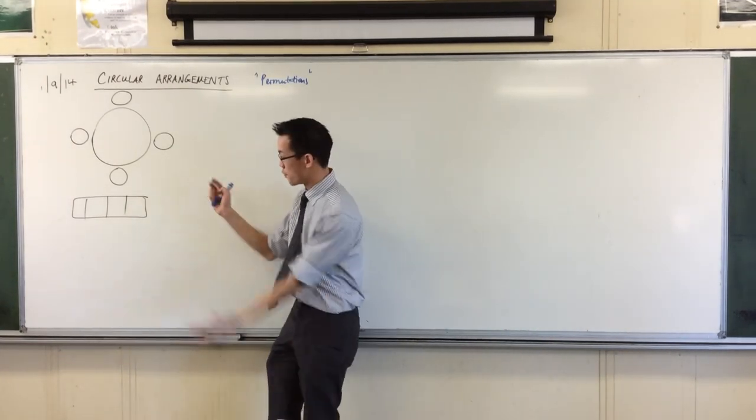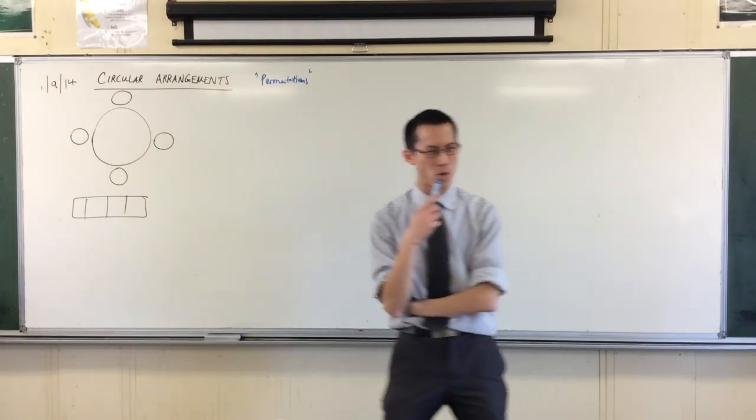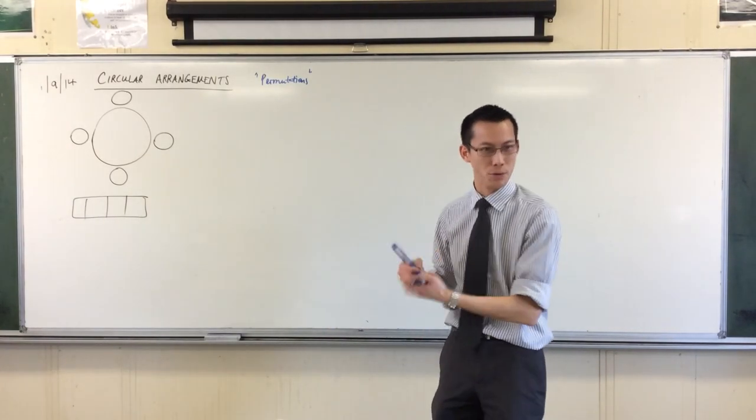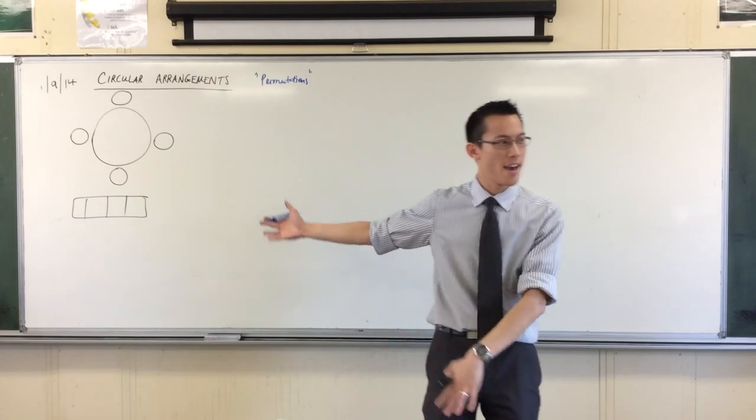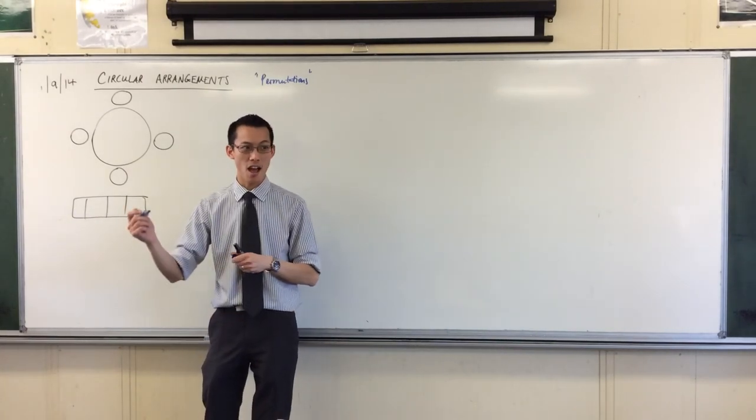If you've got four objects and you want to put them into four places, what was the way that we worked out? There's no replacement - we're actually putting real objects that can't be repeated. How many ways are there to pick something for the first spot? Answer? Four ways.